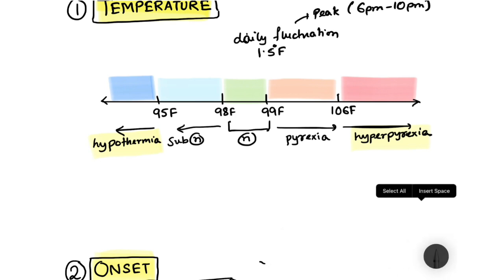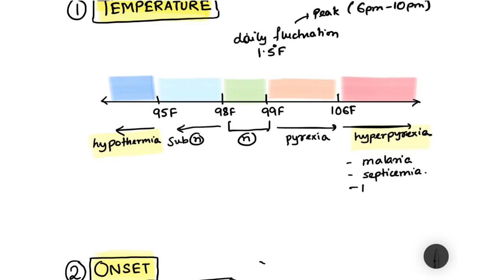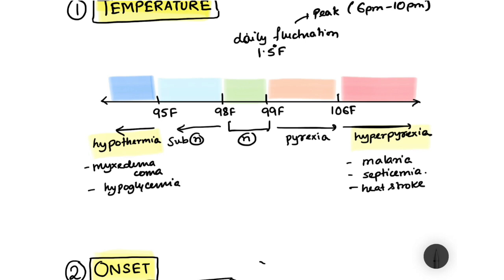Hyperpyrexia can be seen in cases of malaria, septicemia, and heat stroke. Hypothermia is seen in cases of myxedema coma, hypoglycemia, and blood loss. That covers the temperature attribute of fever.